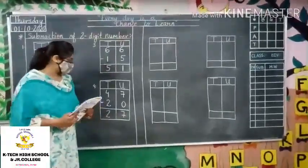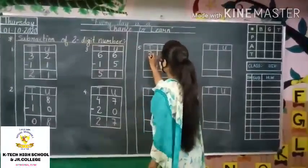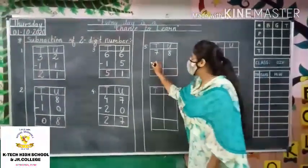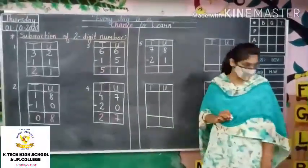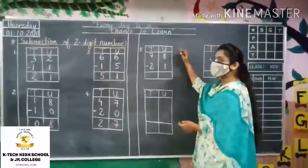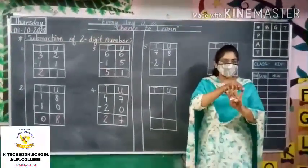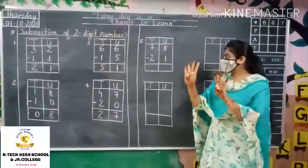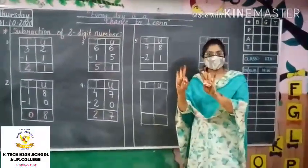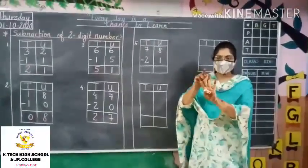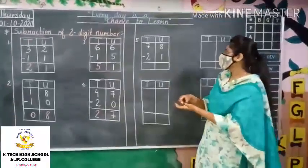Hope you all are understanding the sums. Now students we will continue with another question: 78 minus 21. Put your fingers up and start with units. Put up 8 fingers — 1, 2, 3, 4, 5, 6, 7 and 8. You have to minus 1. Remove 1 finger. How many fingers are remaining? 1, 2, 3, 4, 5, 6 and 7. So the answer is 7.